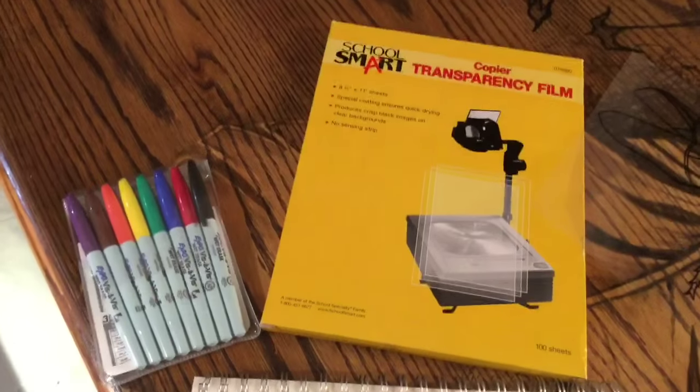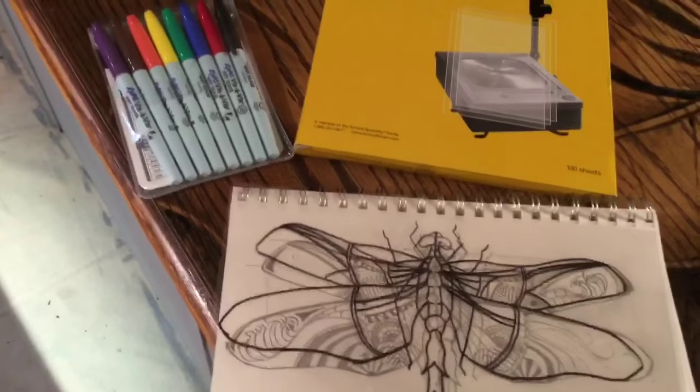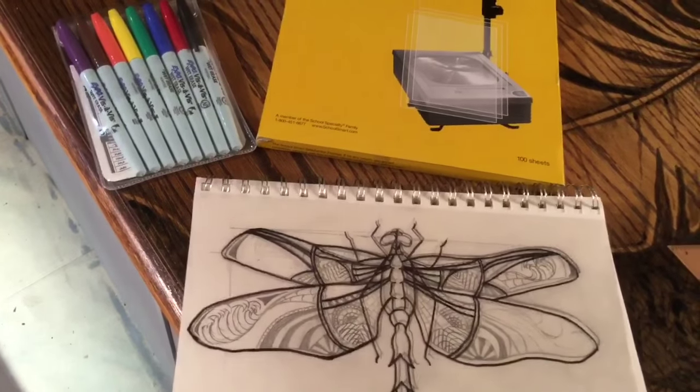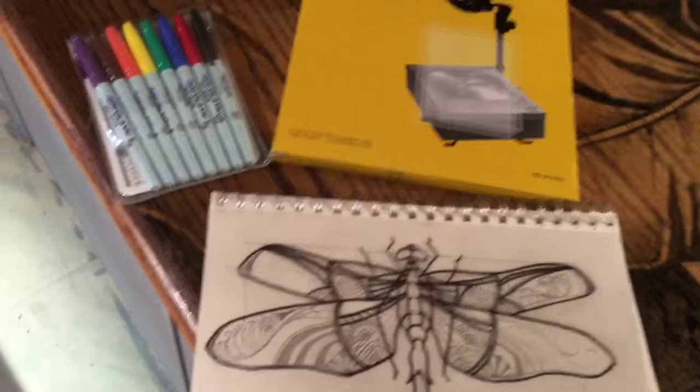Your next thing that you're going to do is get some transparency film. Place it over your sketch and just use Expo markers to kind of outline your artwork.